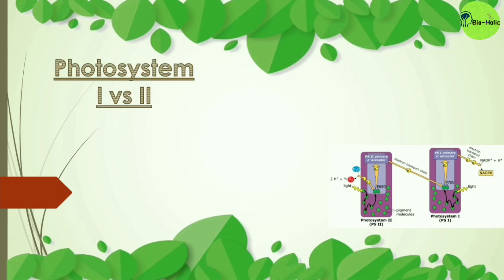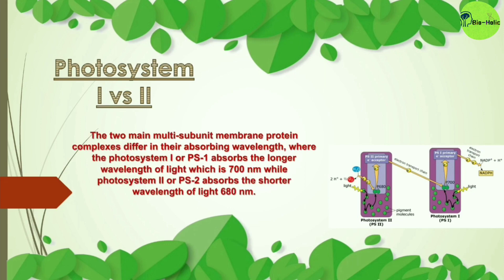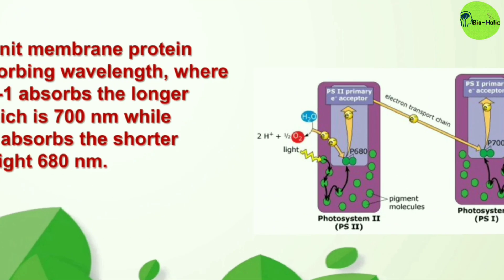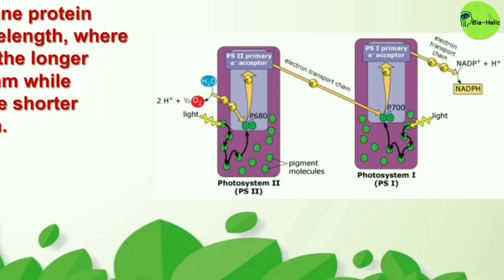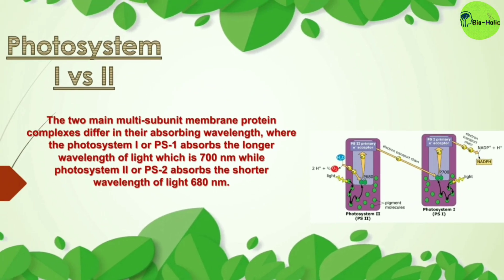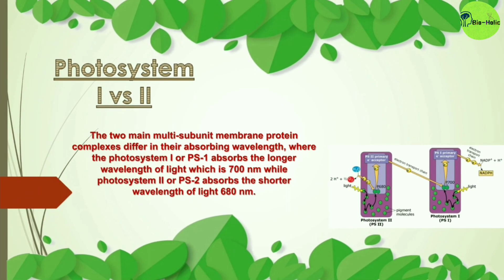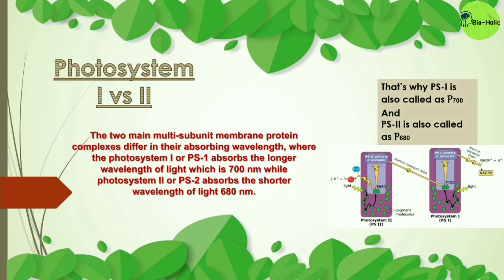Now let's look at the two types of photosystem — Photosystem 1 versus Photosystem 2. These two multi-subunit membrane protein complexes differ in their absorbing wavelengths. Photosystem 1, or PS1, absorbs longer wavelengths of about 700 nanometers, while Photosystem 2, or PS2, absorbs shorter wavelengths of about 680 nanometers. That is why PS1 is also called P700 and PS2 is also called P680.